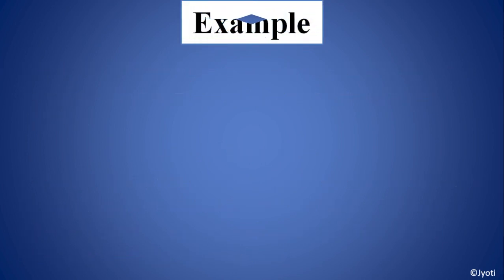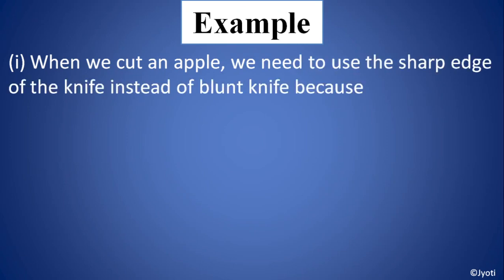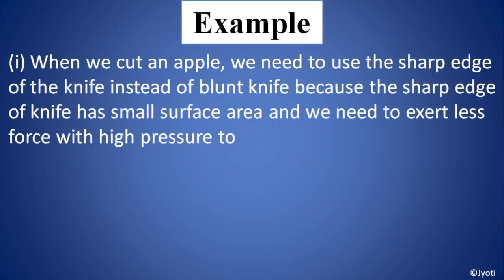Yeh main aapko kuch example doongi, usse aapko samajh mein aa jaega. Jaise when we cut an apple, we need to use the sharp end of the knife instead of a blunt knife. Because the sharp end of the knife has a small surface area and we need to exert less force with high pressure to cut the apple. To hum jab apple ko kaat rahe hain, to knife ka do end hota hai — ek taraf blunt hota hai, ek taraf sharp hota hai. To sharp matlab kya? Wahan par surface area kam hai.